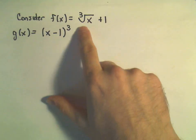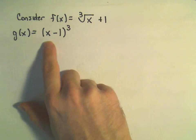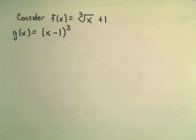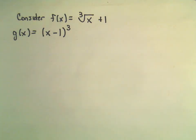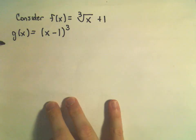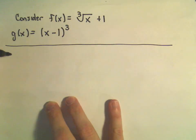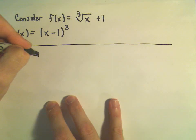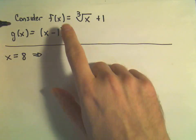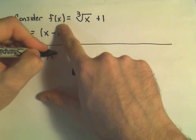Suppose we have f of x equals the cube root of x plus 1, and g of x is the quantity x minus 1 cubed. I'm just going to take a couple numbers and play with them here a little bit. So suppose we take x equals 8 and suppose we plug that into our function f of x.